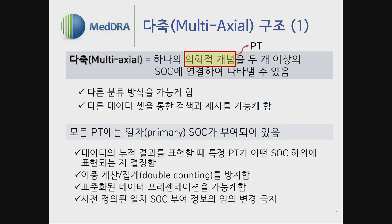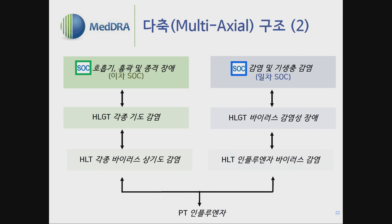One PT can belong to several SOCs, but if you go from top to bottom there can be a double-counting issue. To prevent this, although one PT is linked to many different SOCs, there should be one primary SOC. When accumulating results, double counting is prevented because a primary SOC is assigned, enabling standardized data presentation. The primary SOC is not something the user designates — it is already predefined in MedDRA, so users must follow which SOC is primary for a given PT.